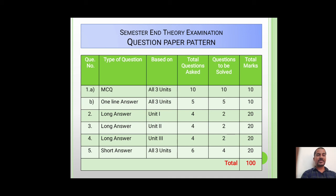The last question, Question 5, is of short answer type. Questions are based on all 3 units and there are 6 short answer questions, out of which the student has to solve 4, each carrying 5 marks, totaling 20 marks. In this way, the total theory question paper will be of 100 marks.